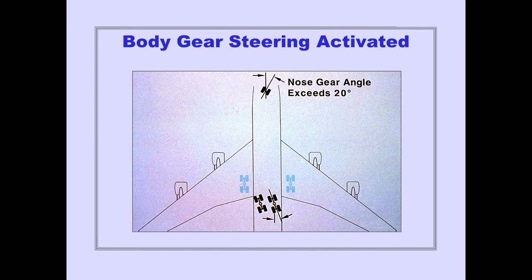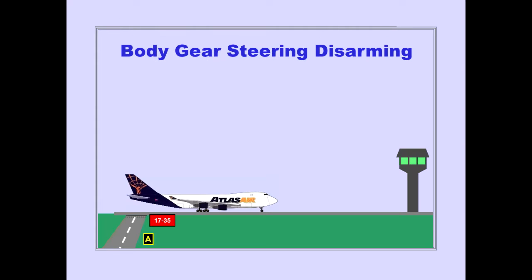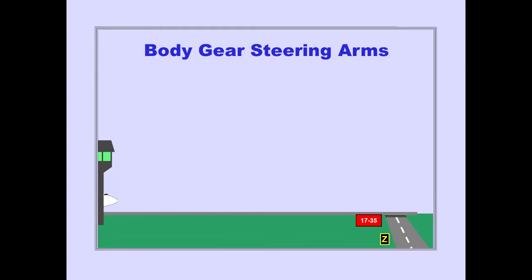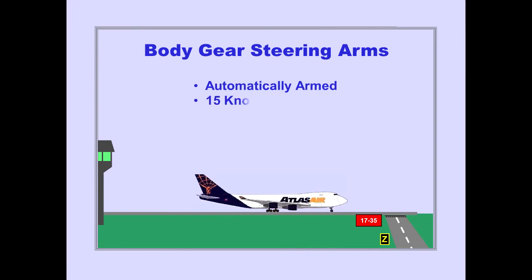Body gear steering is automatically activated when nose gear angle exceeds 20 degrees and body gear steering is armed. Body gear steering automatically disarms at 20 knots with increasing speed, and is automatically armed at 15 knots with decreasing speed.